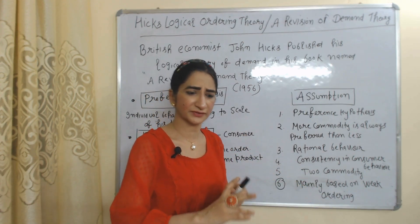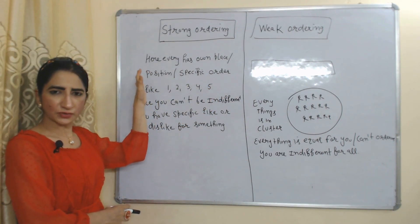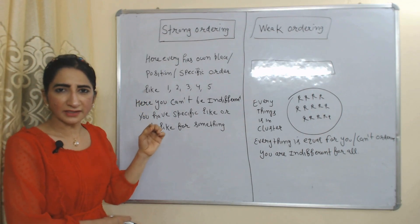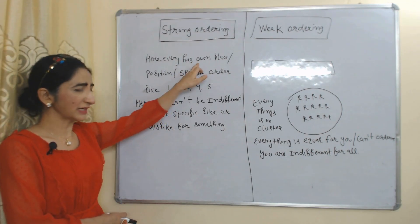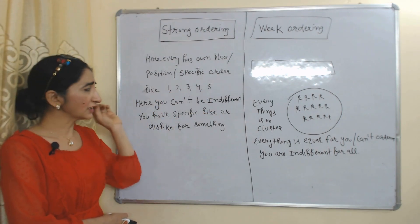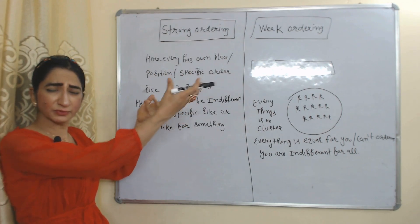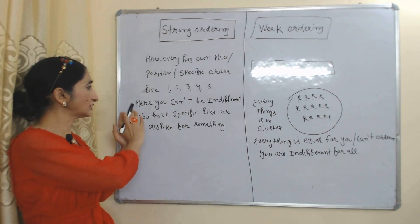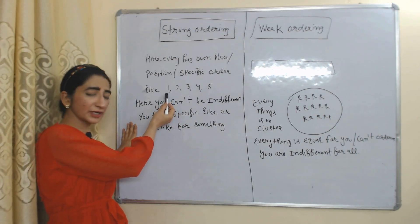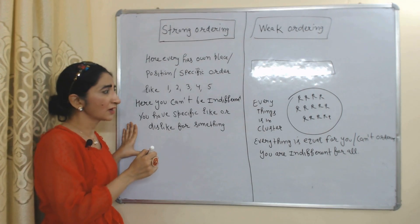Under strong ordering, everything has its own place, position, and specific order — like 1, 2, 3, 4, 5. Here you cannot replace 5 with 1 or 1 with 5 because everything has its own place and specific order. You cannot be indifferent — you have a specific like or dislike for something. For example, you like the product in position number one most, compared to the product in fifth position.